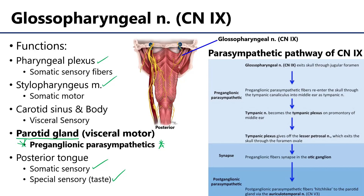The glossopharyngeal nerve is going to exit the cranium through the jugular foramen. It's also exiting with the vagus and accessory nerves as well as the internal jugular vein. As soon as it does, certain fibers are going to split from the glossopharyngeal nerve and re-enter the skull through the tympanic canaliculus, and they're going to end up in the middle ear and condense as the tympanic nerve.